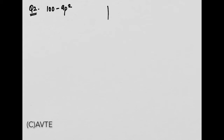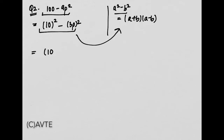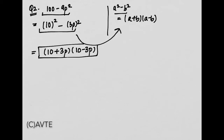Aaiye dekhte hain question number 2: 100 minus 9p square. Hum sabko pata hai ki a square minus b square ko jab hum kholte hain toh answer aata hai a plus b into a minus b. Yeh question bhi isi form mein diya gaya hai. 100 ka root is 10, aur 3p ka whole square is 9p square. So we get: 10 plus 3p into 10 minus 3p. Yeh hain hamare factors of the given polynomial.